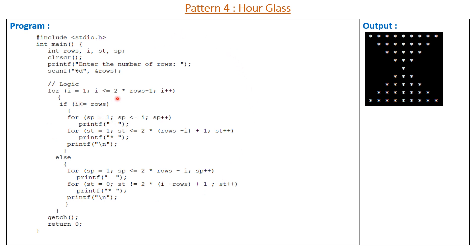Now we see the program. I started the outer for loop from 1 to rows multiplied by 2 minus 1. In Part 1, the space printing loop runs from 1 to less than I, and the star printing loop runs up to 2 multiplied by (rows minus I) plus 1. In the else part, the space printing loop runs up to 2 multiplied by rows minus I, and the star printing loop runs up to 2 multiplied by (I minus rows) plus 1. After executing this program we get the hourglass pattern printed in C language.